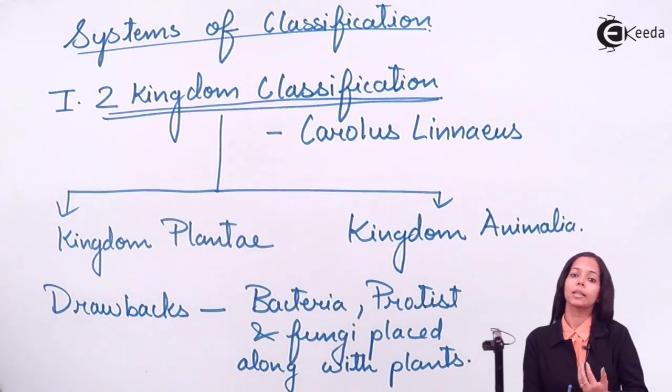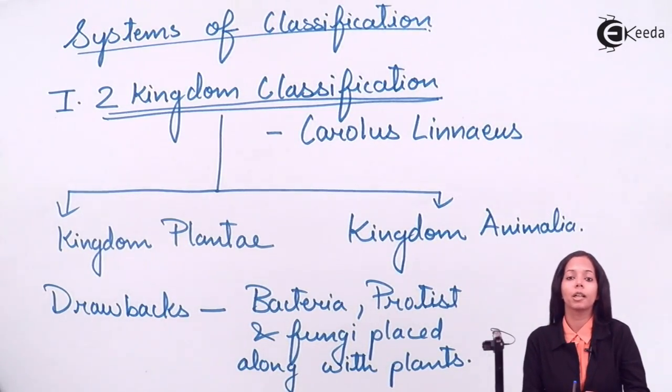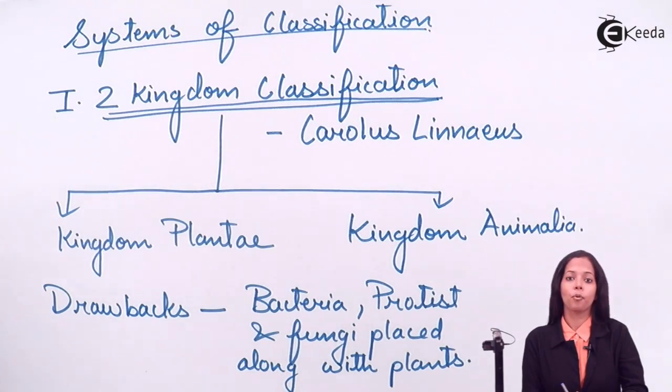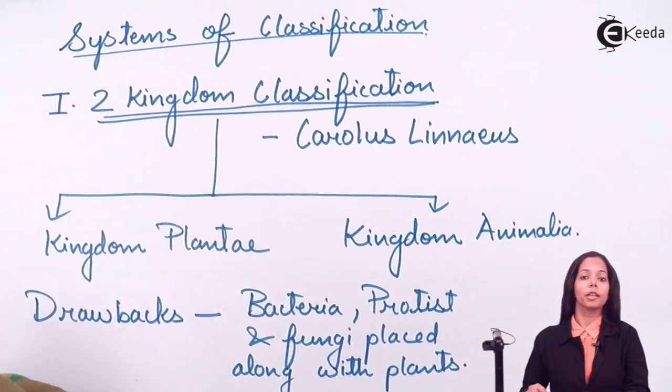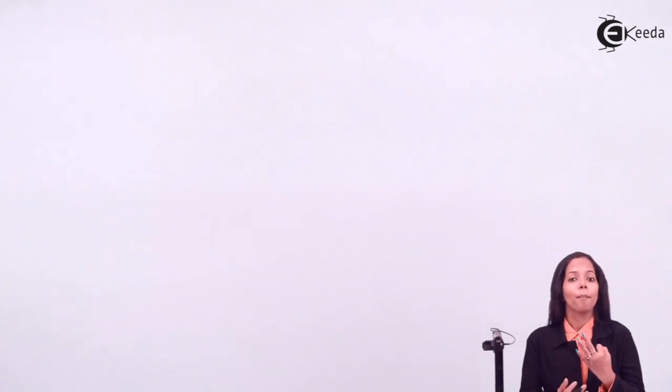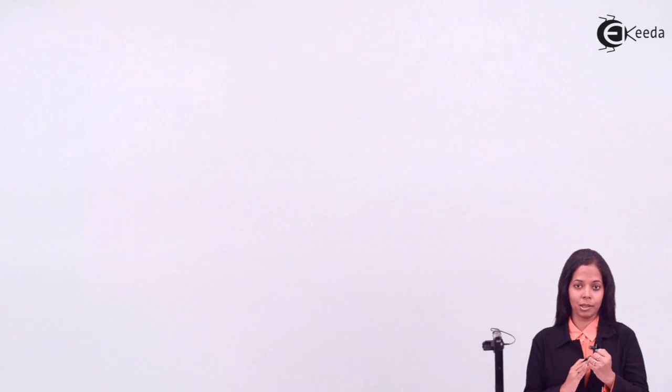After observing the drawbacks of the two-kingdom system, another scientist introduced a third kingdom called Kingdom Protista. This kingdom was introduced by scientist Haeckel. So now together, three kingdoms had been formed: Plantae, Animalia, and Protista. This resulted in the second system, named the three-kingdom classification.